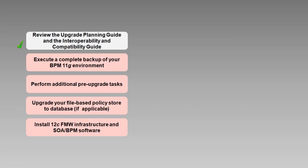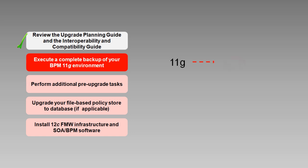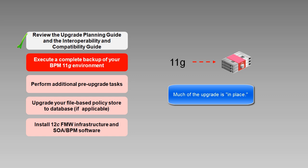After you've reviewed the documentation and verified that your environment meets the system, certification, compatibility, and interoperability requirements, the next task is to create a complete backup of your 11G environment, including the database. Much of the upgrade occurs in place, meaning that it makes changes to your existing installation that cannot be undone. If anything goes wrong, you will need a full backup to be able to restore your environment and try the upgrade again.